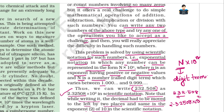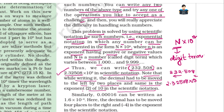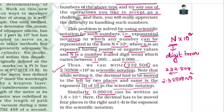For example, moving two decimal places to the left, 232.508 can be written in scientific notation. Similarly, 0.00016 can be written as 1.6 × 10^(−4). Here the decimal has been moved four places to the right, and minus 4 is the exponent in the scientific notation.